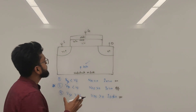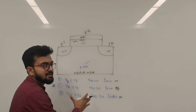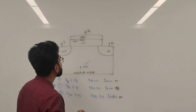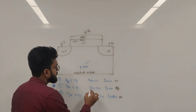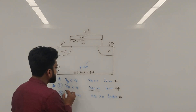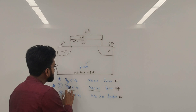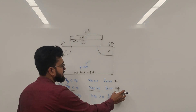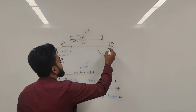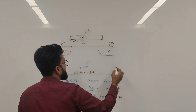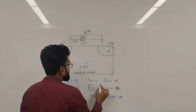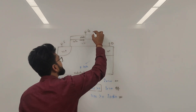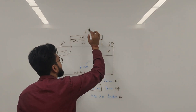We can divide the concept of GIDL current into three parts. The first requirement is that VGS must be less than V-threshold so the device is off. When VDS is positive, it creates an electric field between the drain and the gate.